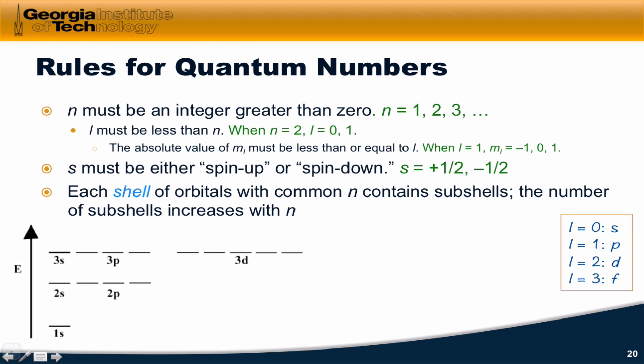we saw before that as n, the principal quantum number, increases, the energies of the electron increase. n equals 1, n equals 2, n equals 3. As we add the subshells into the mix,